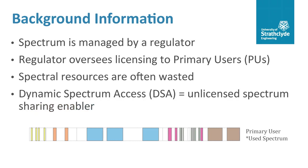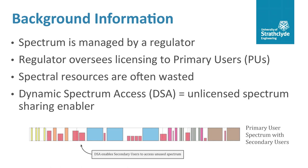Dynamic spectrum access, or DSA, is a method of spectrum sharing where secondary users are able to access the spectrum and establish communication channels on an unlicensed or light-licensed basis. Subject to a new regulatory framework, DSA would see licensed primary users encouraged to share bands they are not using, allowing the spectrum to be used more efficiently.